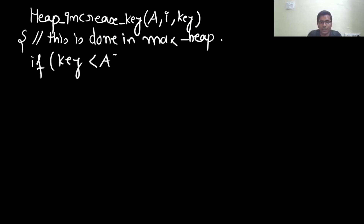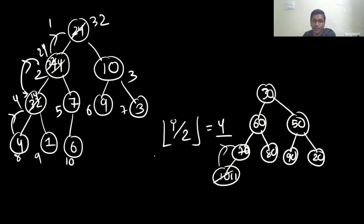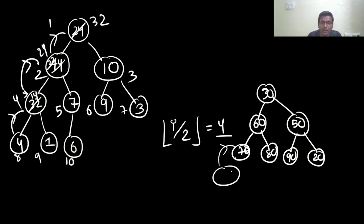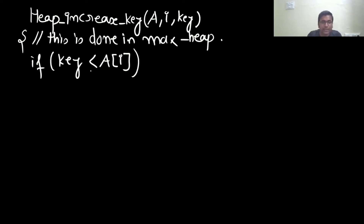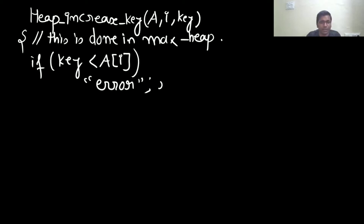First I check: if the key is smaller than A[i] — meaning the value you are trying to set is smaller than the current value at index i — that is not an increase. For example, if the node already has 10 and you give 9, that is not an increase-key operation. So I print an error message that the input is incorrect. The given value is not greater than the previous value, and we return from here.